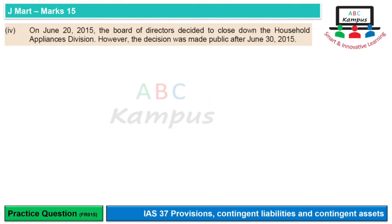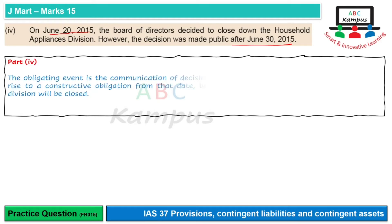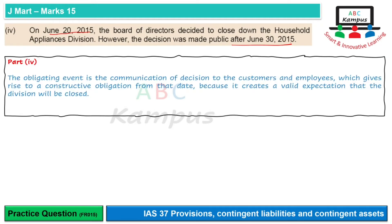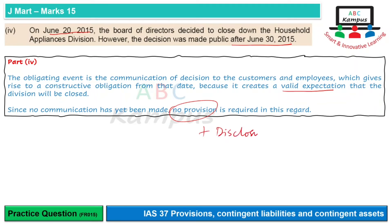Fourth point: On June 20, 2015, the board of directors decided to close down the Household Appliance division, however the decision was made public after June 30, 2015. IAS-10 aur IAS-37 ke provisions apply karne par — board of directors ka sirf decision tha aur announce nahi kiya gaya tha, jab tak decision announce nahi hota humari obligation create nahi hoti. Toh year end par koi obligation nahi thi, koi provision recognize nahi karni chahiye. However, kyunki year end ke baad announce kar rahe hain, yeh non-adjusting event ban jata hai. The obligating event is the communication of decision to customers and employees, which gives rise to constructive obligation because it creates a valid expectation. Provision recognize nahi karenge lekin financial statements mein disclosures de deney chahiye.